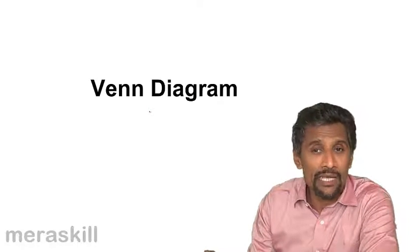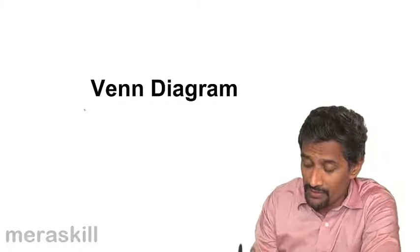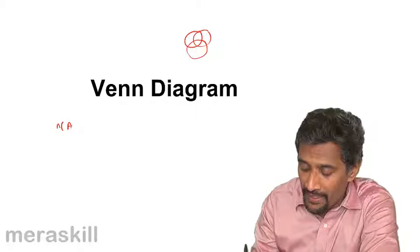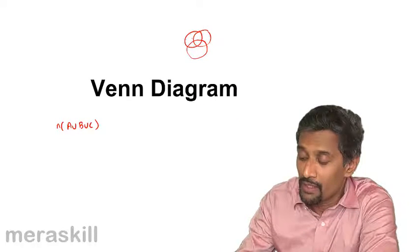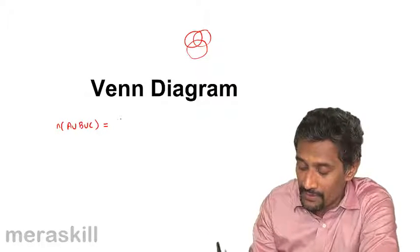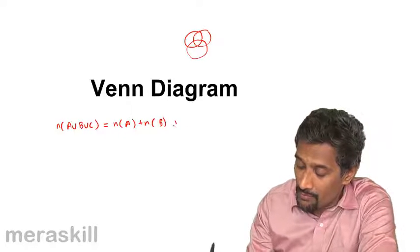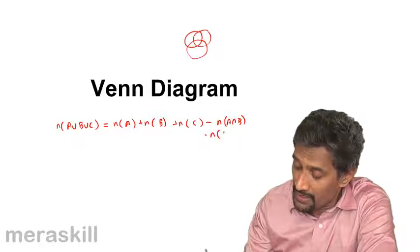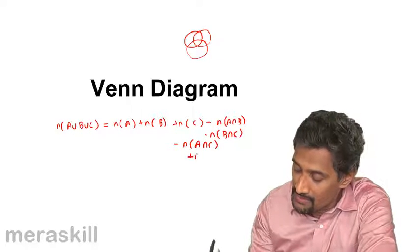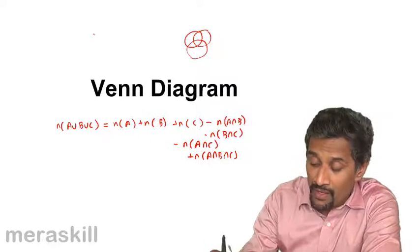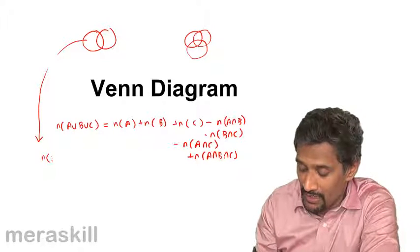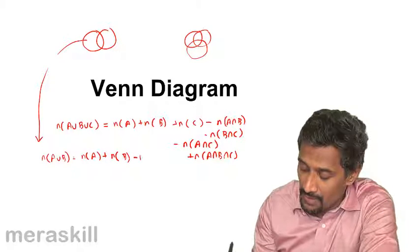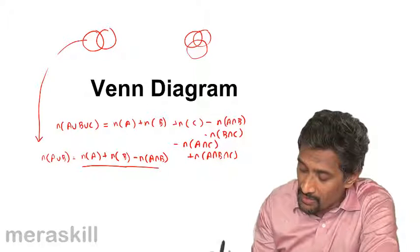So dear friends, we had taken up some questions on Venn diagrams earlier. We'll just brush up the formula: if you have three circles intersecting, N of A union B union C equals N(A) plus N(B) plus N(C) minus N(A∩B) minus N(B∩C) minus N(A∩C) plus N(A∩B∩C). And for two circles, N of A union B equals N(A) plus N(B) minus N(A∩B). These are the two formulas we need to apply.